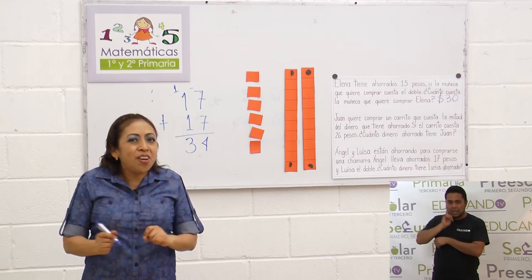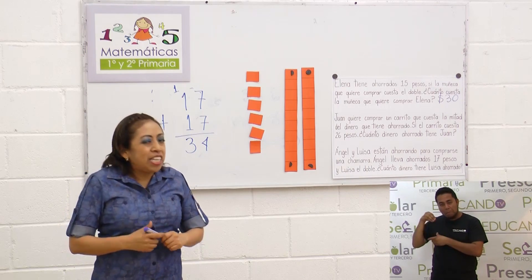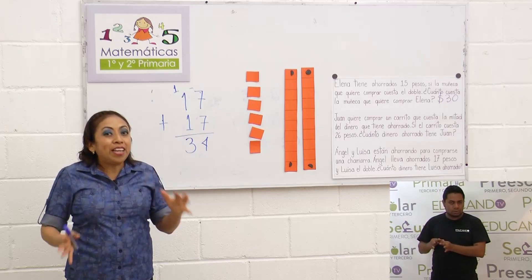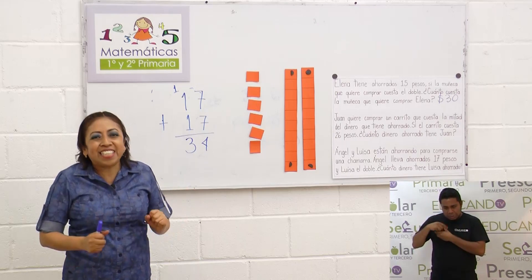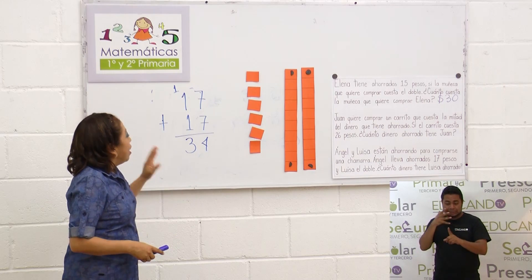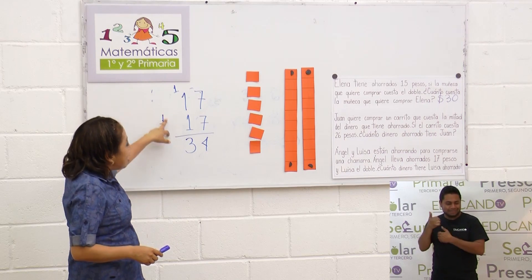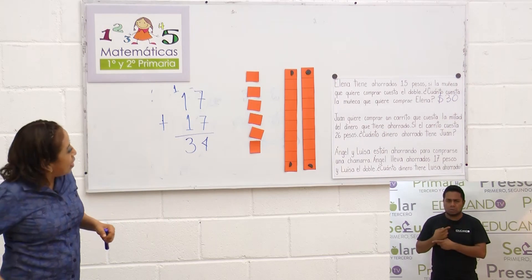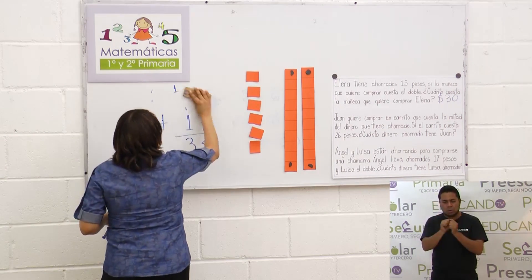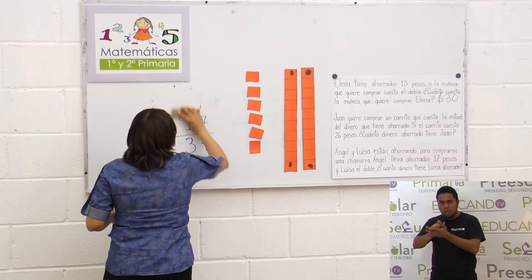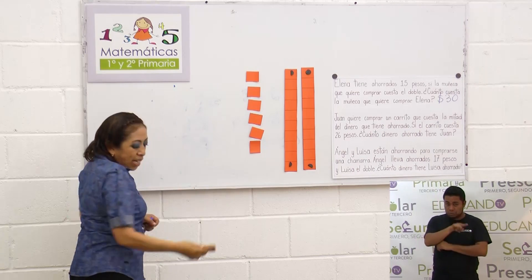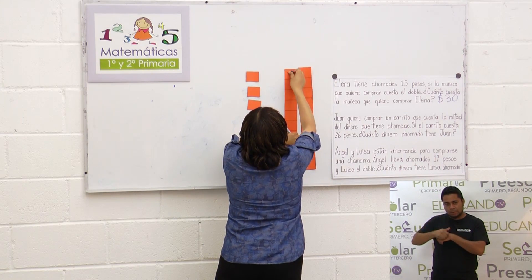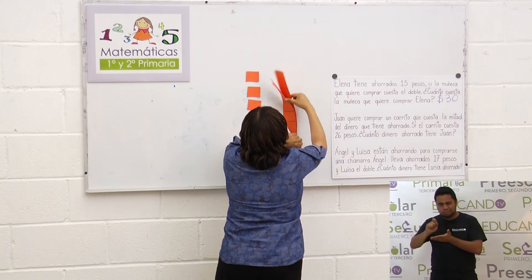Tiene treinta y cuatro pesos. Entonces el doble de diecisiete es treinta y cuatro. Vamos a ver un ejemplo más, ya no con problemas, sino cómo podemos transformar esas dos veces una cantidad en una operación matemática.